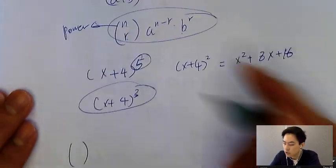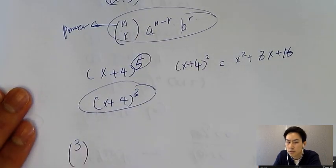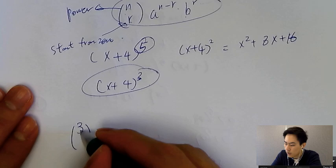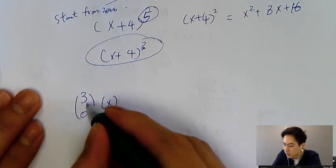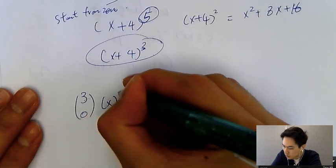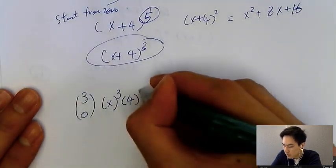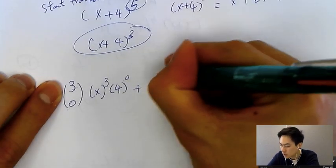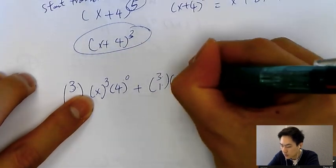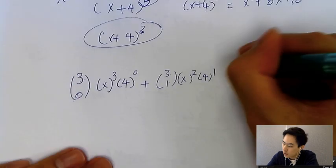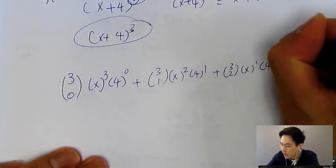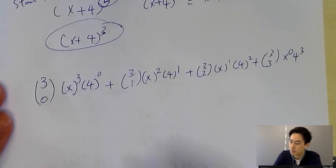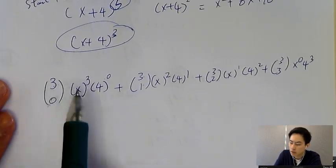To expand this, just follow the equation. The power is 3. r always starts from 0. So it's 3C0 times x^(3-0) times 4^0, plus 3C1 x^2 4^1, plus 3C2 x^1 4^2, plus 3C3 x^0 4^3. Very simple. The pattern is very clear. The power is all 3 and r starts from 0, then 1, 2, 3.